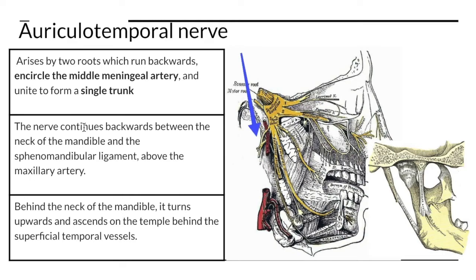This nerve continues backwards between the neck of the mandible and the spinomandibular ligament, above the maxillary artery. Behind the neck of the mandible it turns upwards and ascends on the temple behind the superficial temporal nerves.